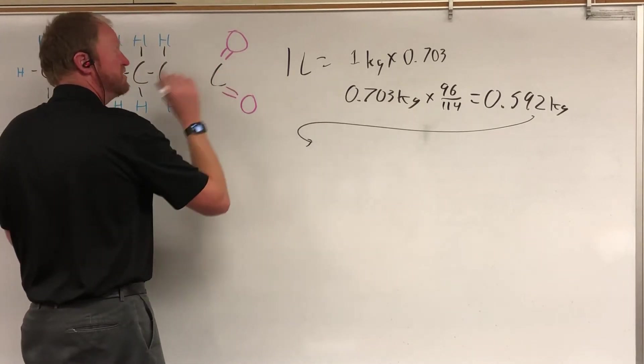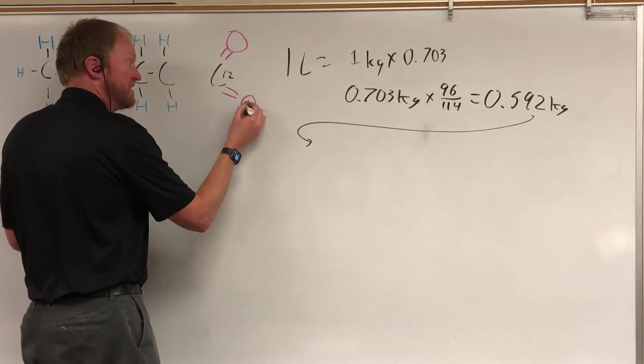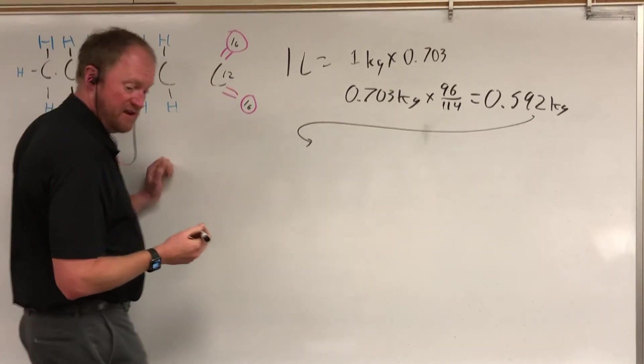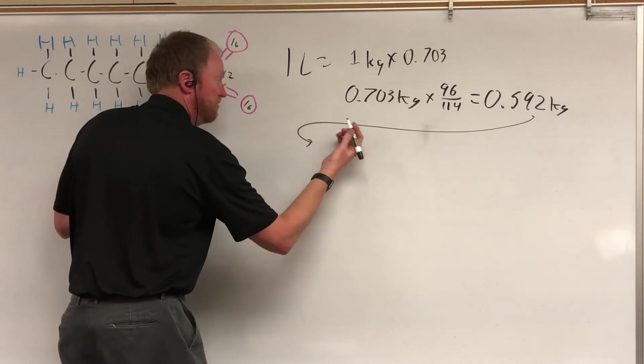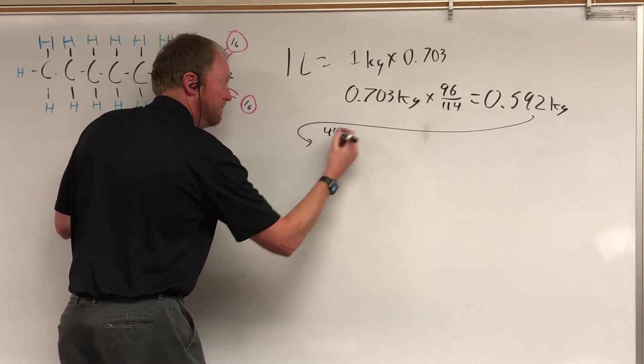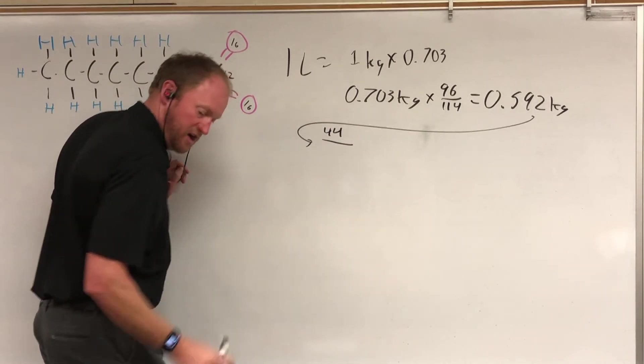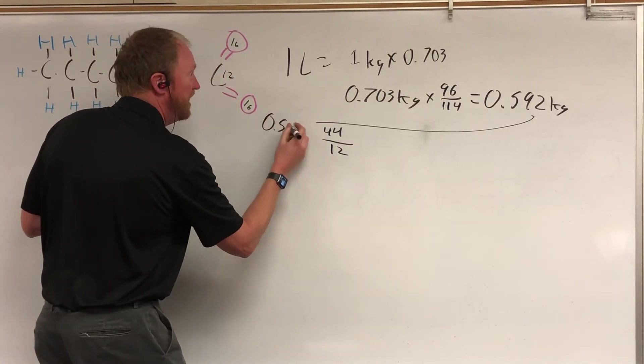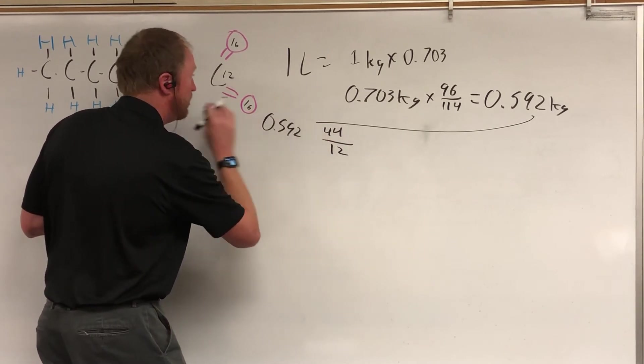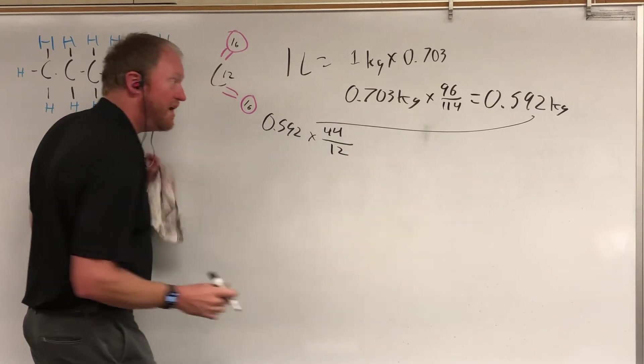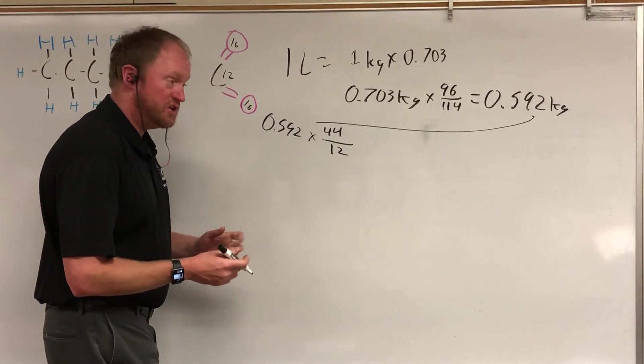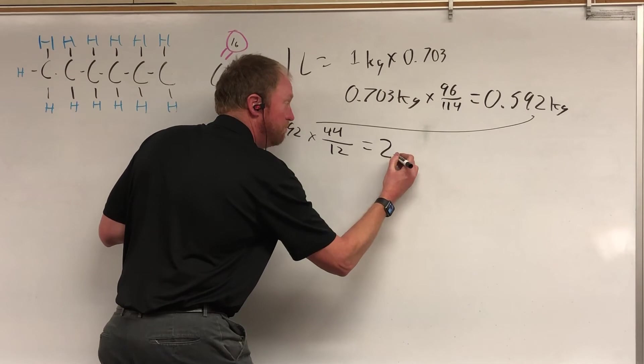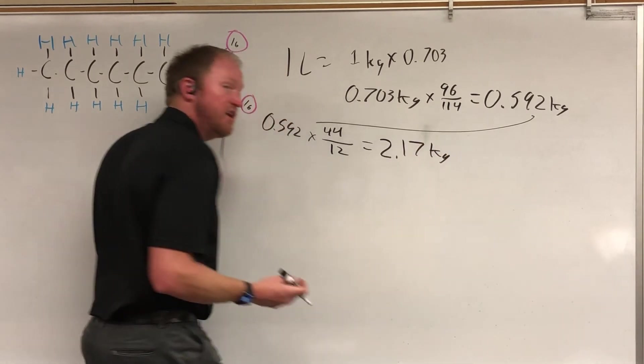And the masses are interesting here. So the carbon we said was 12, the oxygen has a mass of 16. So 16 and 16 is 32 plus the 12. So if we compare that, so we have a total of 44, the total mass of the carbon dioxide is 44 that you get out over 12 put in. So we have 0.592 kilograms that are carbon in the gasoline. You multiply that by 44 over 12 to find out how much carbon dioxide you're going to get when you burn that. And you find that you end up with 2.17 kilograms of carbon dioxide.